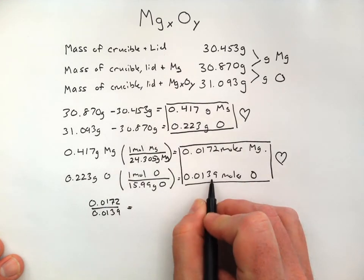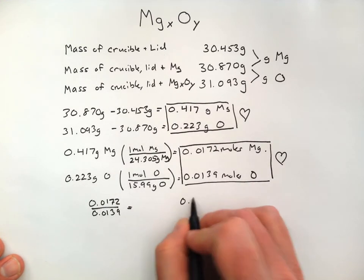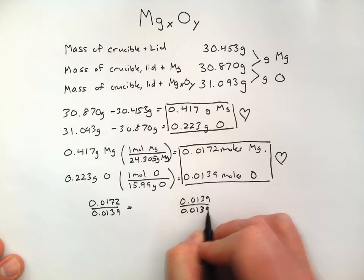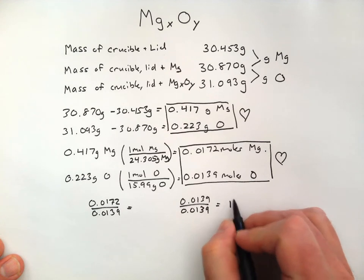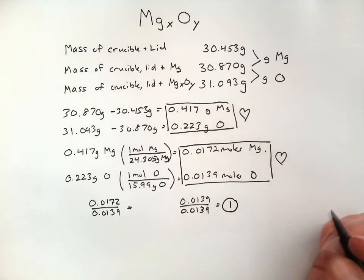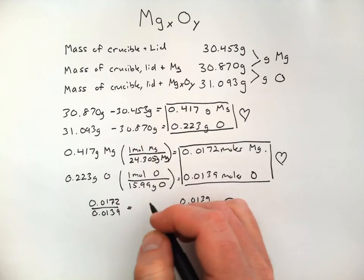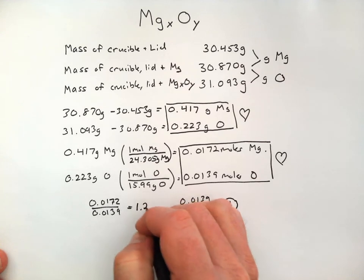Now, the smaller of the two is that one. And, when you do this, automatically, one of your values becomes a 1 because you're dividing it by itself. Then, you go to the other one and divide it by the same value. And, I get here a 1.23.